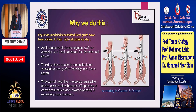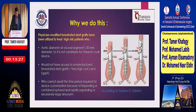Physician modified fenestrated stented grafts have been utilized to treat high-risk patients who have an aortic diameter of the visceral segment less than 30 millimeters, so they are not candidates for the T-Branch Cook device, would not have access to a manufactured fenestrated stented graft, or face very high cost as in Egypt. Also, sometimes patients cannot await the time period required for device customization because of impending or contained rupture and rapidly expanding or excessively large aneurysm.